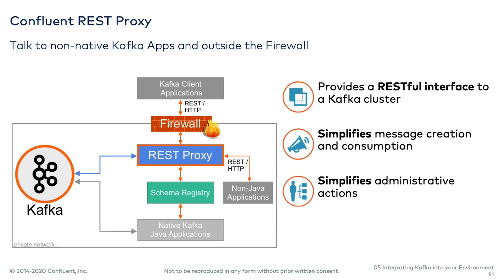The Confluent REST proxy is really just a REST wrapper around the producer and the consumer. Whatever language you're using, you almost certainly have community support for some Kafka library. But if you want to use an HTTP interface, the REST proxy lets you do that. It's a way to produce messages into topics, subscribe to topics, and consume from them all through a fairly simple RESTful interface. It also exposes certain administrative capabilities over that same interface.